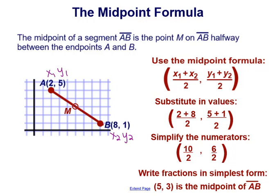So x1 plus x2 is going to be 2 plus 8 divided by 2 — that's 10 divided by 2, which is 5. We then have y1 plus y2 divided by 2 for the y-coordinate, which is 5 plus 1 divided by 2, which is 6 divided by 2, which is 3. So the midpoint in simplest form is (5, 3). You can even visually see it looks like it's halfway between the endpoints of segment AB.